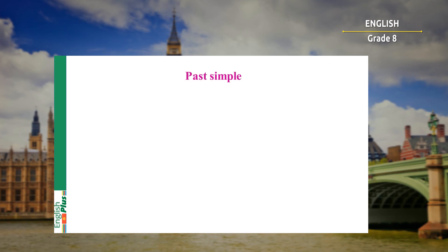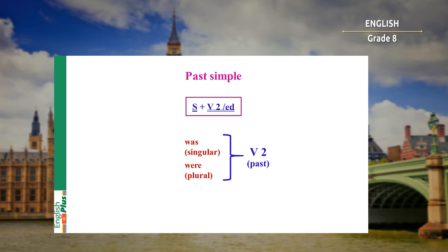Now let's see what we have learned today. Today we have revised past simple tense. We have learned that to put a sentence into past tense, we should use a regular verb with ending -ed and an irregular verb in the second form. If there is no main verb, we should use 'was' for singular and 'were' for plural nouns – they are the second form of verb 'be'. Thank you for your attention, that's all for today. See you next time, goodbye!